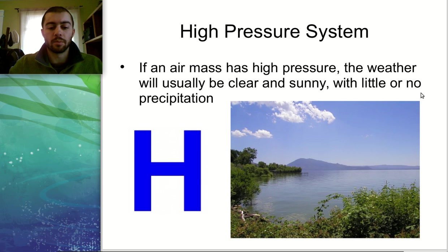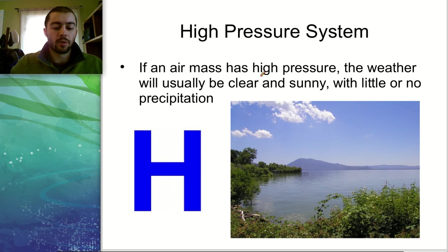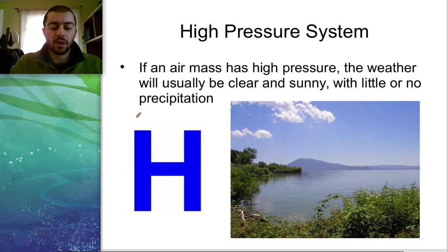We're also going to talk about a couple of different types of pressure systems. Air pressure creates pockets of air — masses of air that have high pressure or low pressure. If you have a high pressure system, the weather is usually going to be clear, sunny, with no precipitation. This image here would be a good example of a high pressure system. A great way to remember this is the phrase 'high and dry' — high pressure, symbolized by an H on the map, means dry and usually pretty pleasant weather.